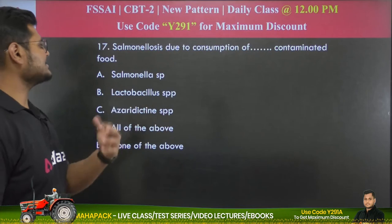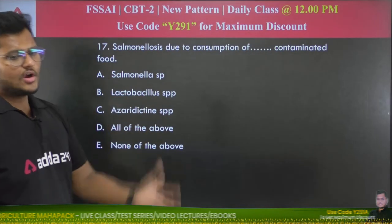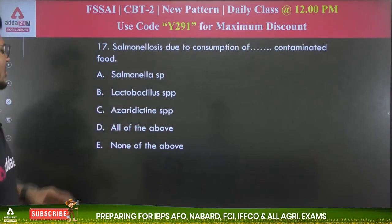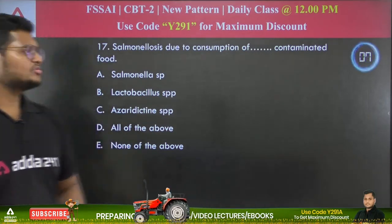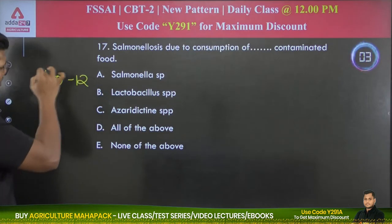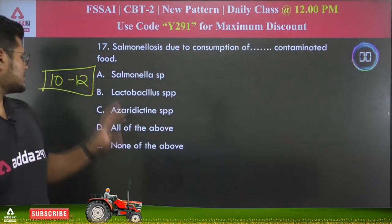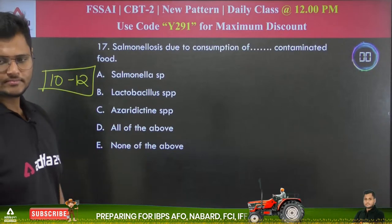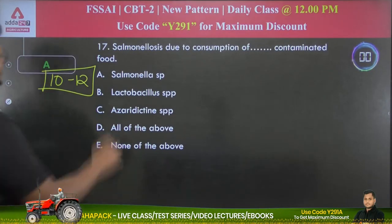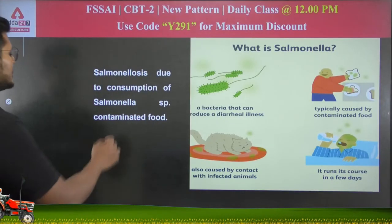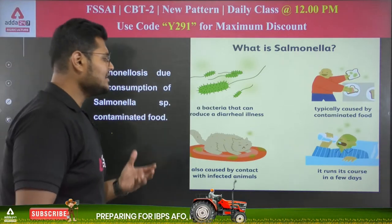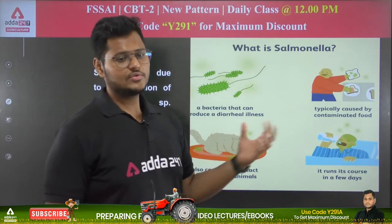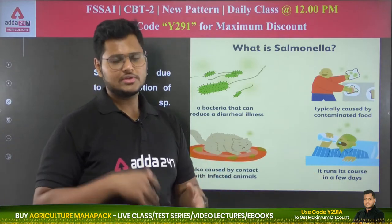Question 17: Salmonellosis is due to consumption of what contaminated food — Salmonella species, Lactobacillus, or Aziridi-ctine? The answer is Salmonella species. Salmonellosis occurs due to contamination of food with Salmonella species — a bacteria that causes diarrheal illness, typically through contaminated food or contact with infected animals. The illness generally runs its course in a few days.